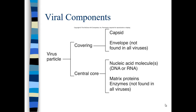Looking at simple viral components, we start with the virus particle. There's always a capsid — made out of protein — and sometimes an envelope. The envelope is donated from the host cell membrane, and not all viruses have an envelope. The central core consists of nucleic acid molecules — either DNA or RNA — and then matrix proteins, which are not found in all viruses. Matrix proteins hold together nucleic acids. Enzymes are responsible for digestion of cellular components to allow entry into the cell by the virus particles.